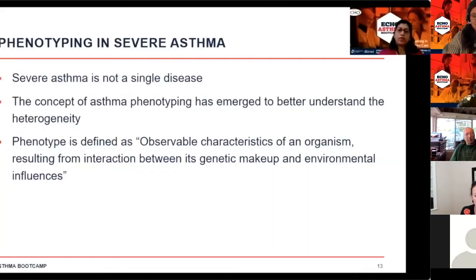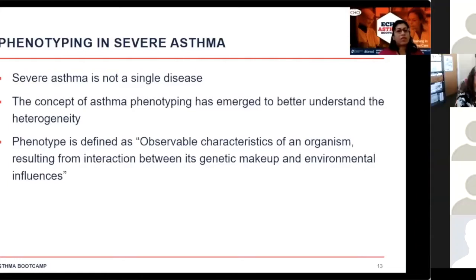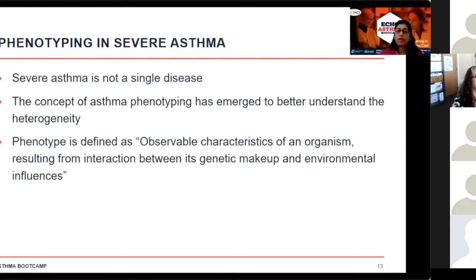So what is phenotyping in severe asthma? Severe asthma is not really a single disease, and it's quite heterogeneous. The concept of asthma phenotyping has really emerged to better understand the heterogeneity of severe asthma. The definition of phenotype is an observable characteristic of an organism resulting from the interaction between its genetic makeup and the environmental influences.